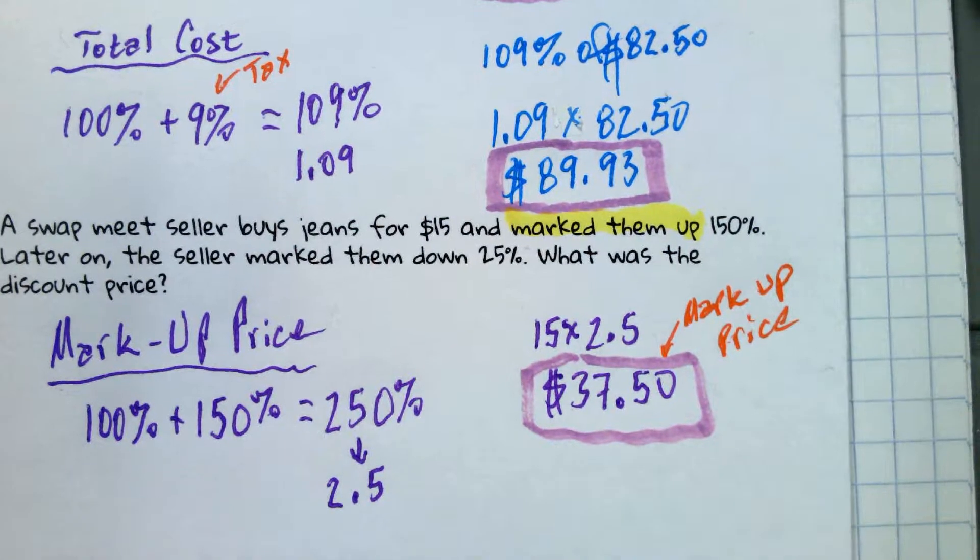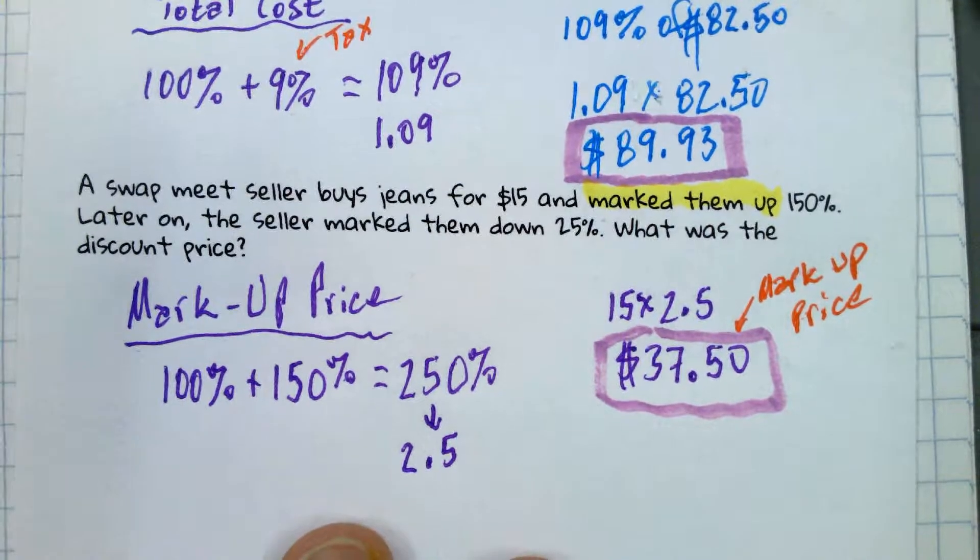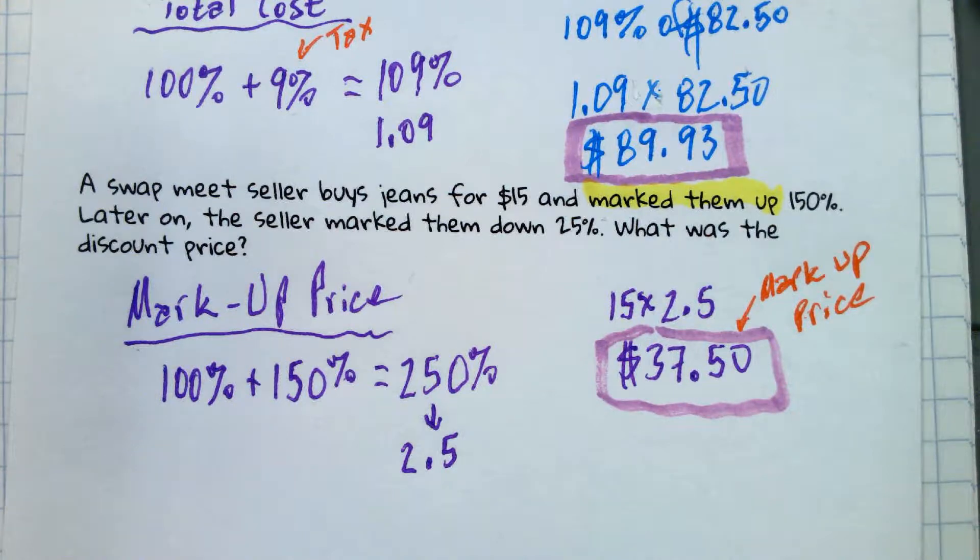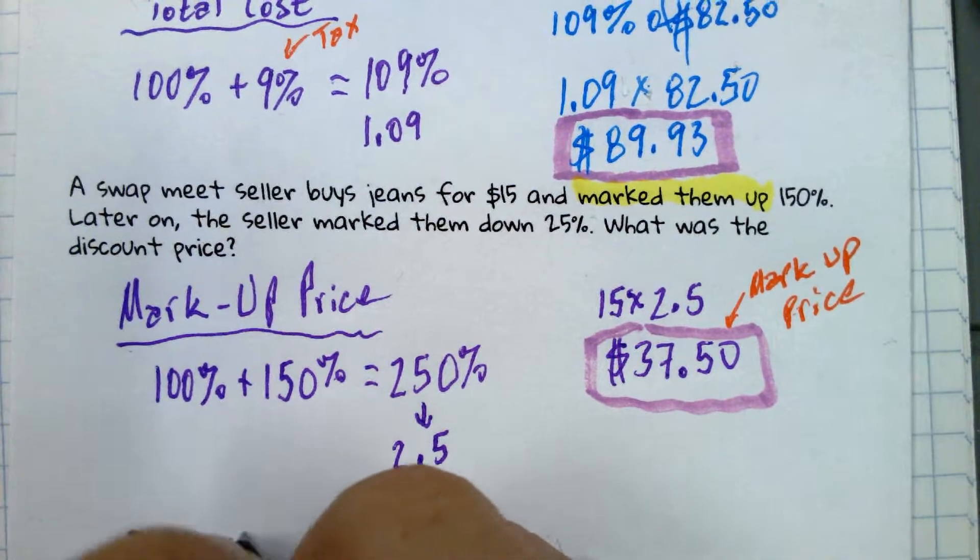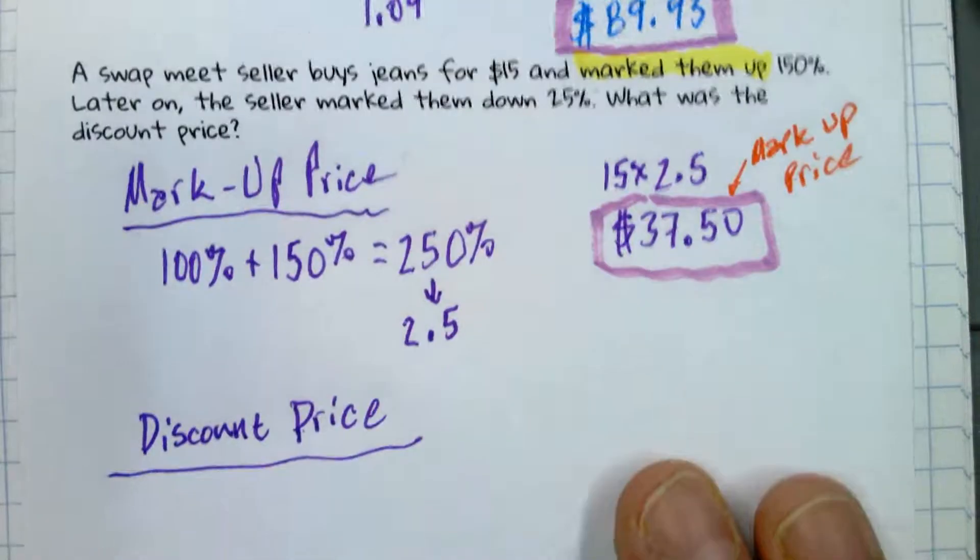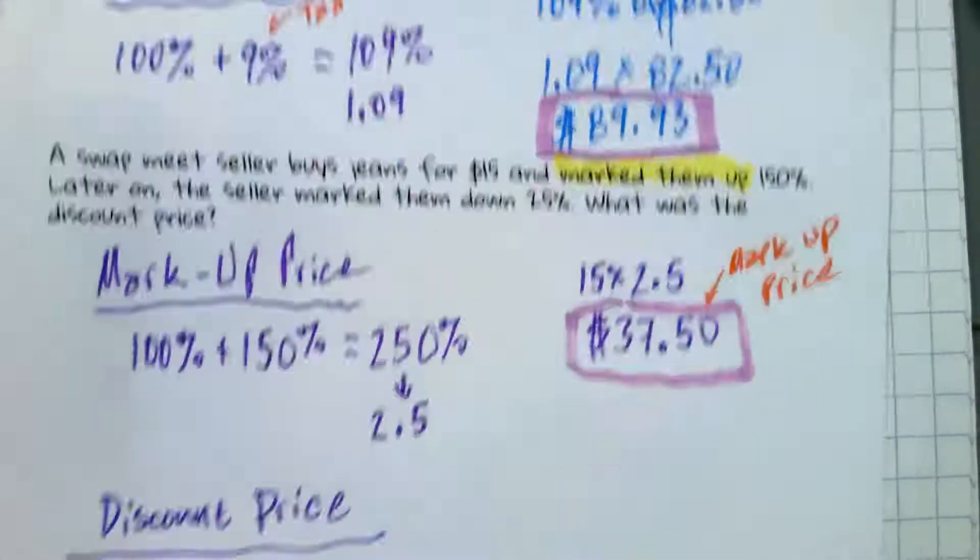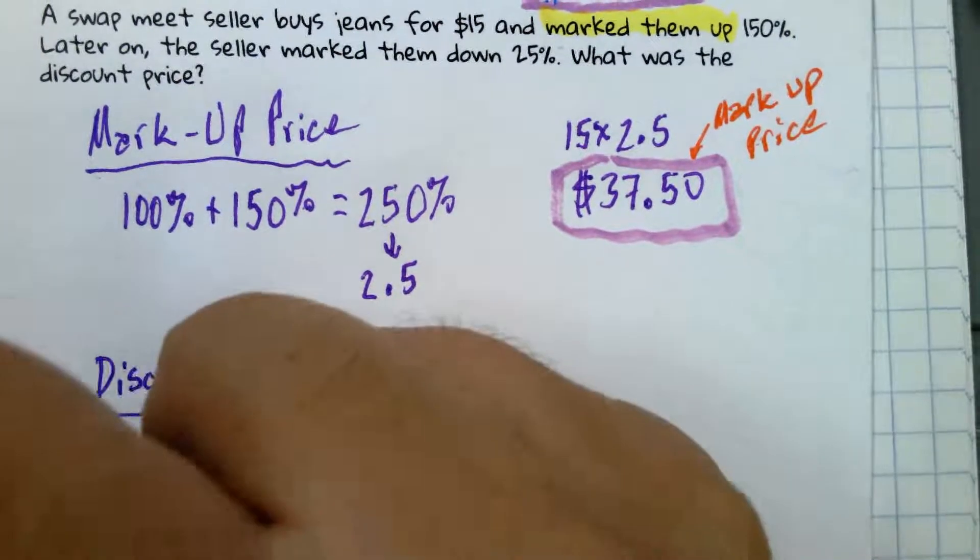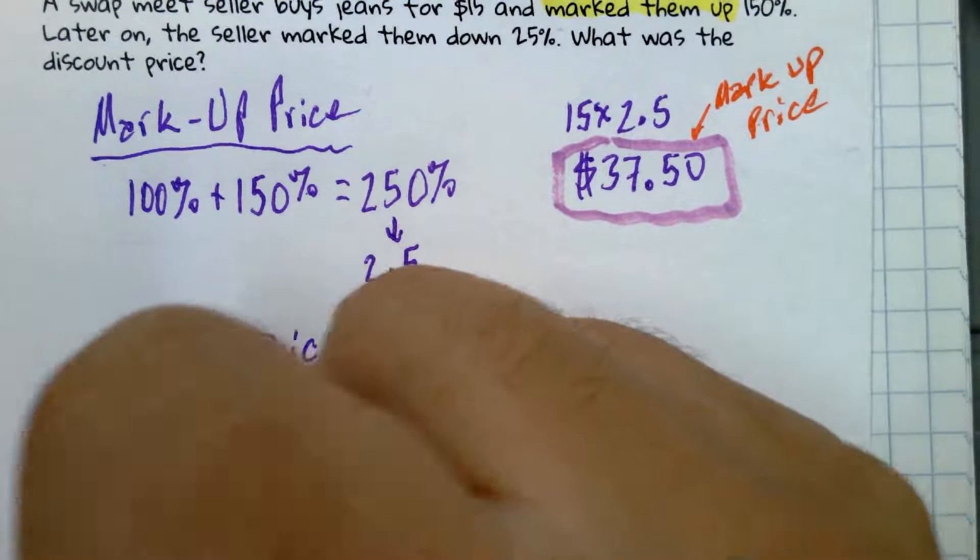So now, what's going to happen later? What do we eventually have to do? Those jeans are just sitting there. They're not selling. You have to bring it down by what percent? 25%. So this time it's a discount price. So now to get the discount price, remember how we did the discount price before? Let's try that. We're going to take the full price now, $37.50. That's 100%. And what do we have to do? Subtract 25%.